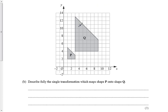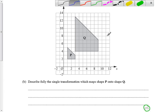Ok, 11b on this, we've got a shape, and this time we've got to describe the single transformation which gets from P onto Q. Now, this is three marks, so we need three bits of information here in order to get all three marks.